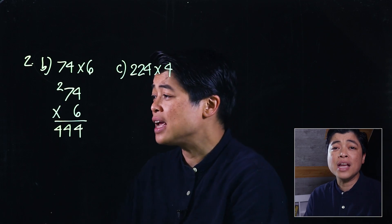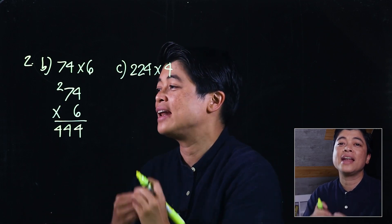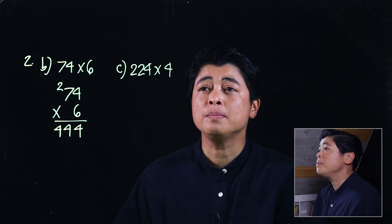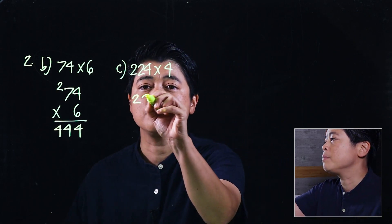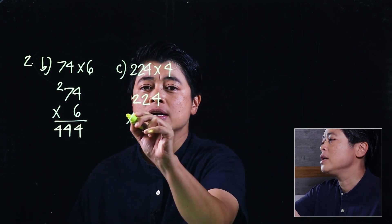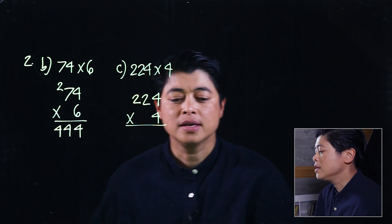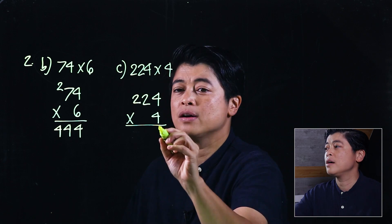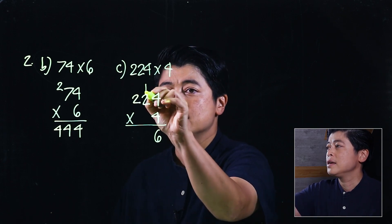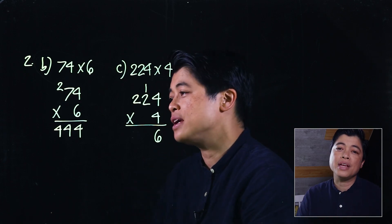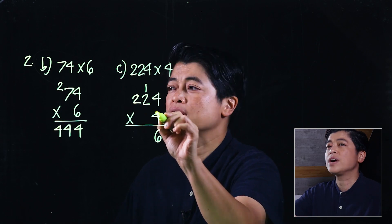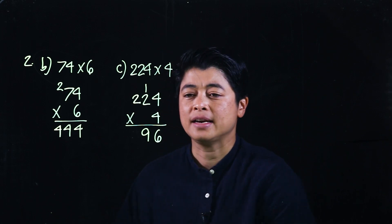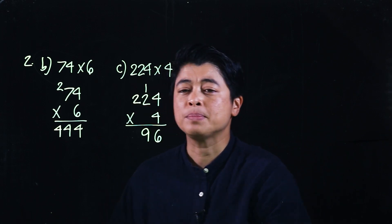When we say regrouping that means we carry and add after we multiply. In the next problem, it will be the bigger number 224 times 4. If we multiply 4 times 4 that will be 16, we carry or we regroup. Then 4 times 2 is 8, plus 1 is 9.